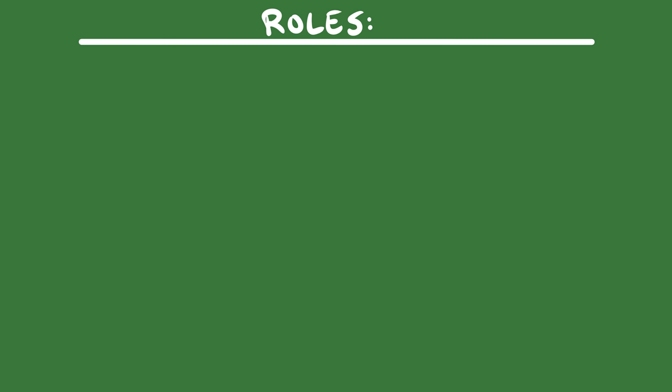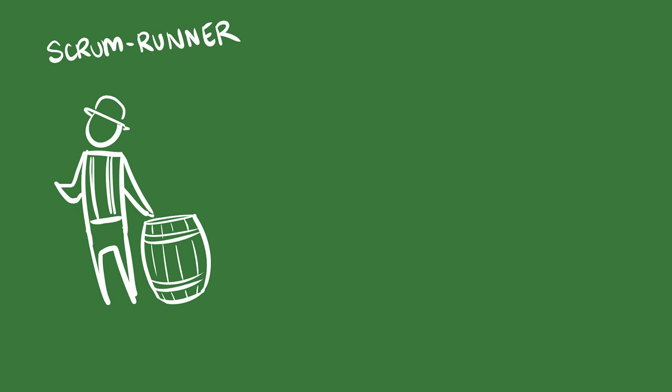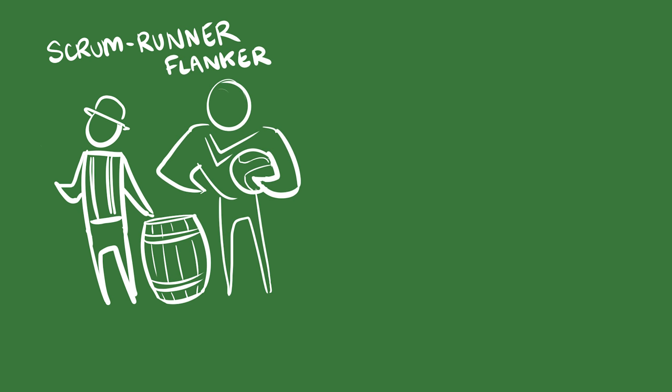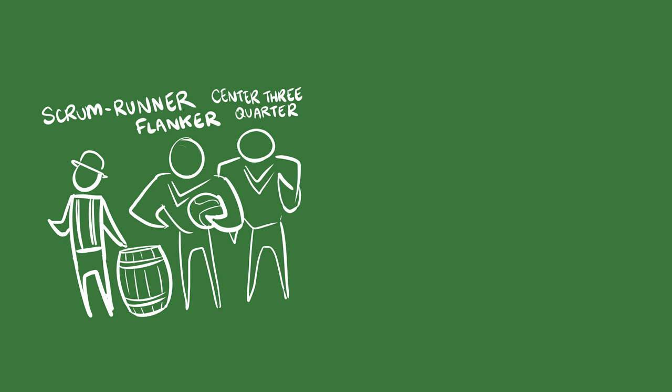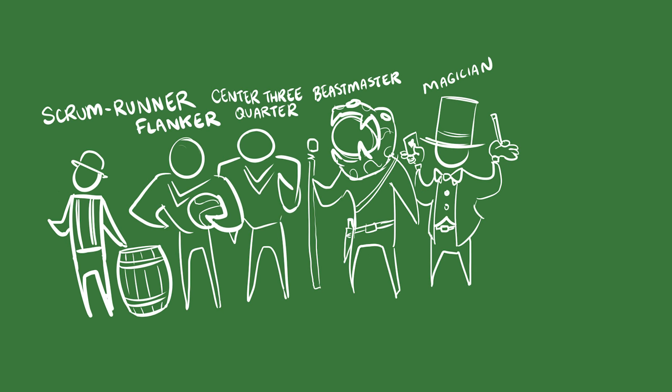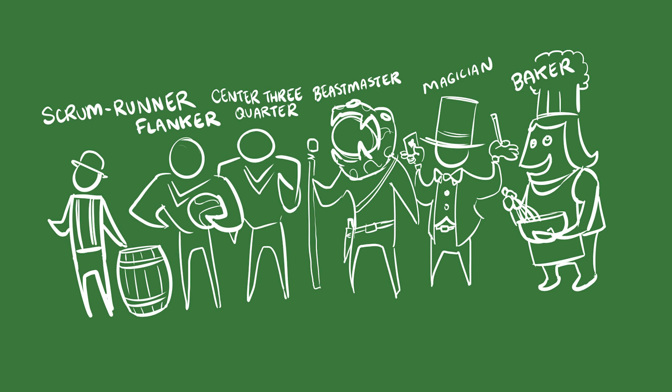There are also a number of optional Scrum roles that we won't discuss in this presentation, including Scrum runner, flanker, center three-quarter, beast master, magician, baker, and Steve.